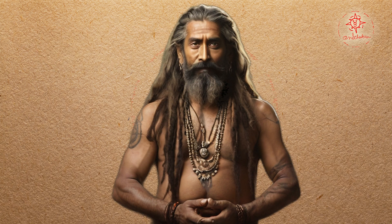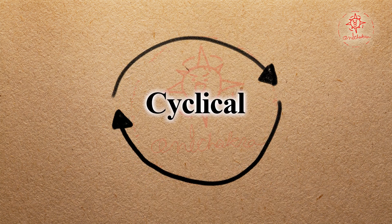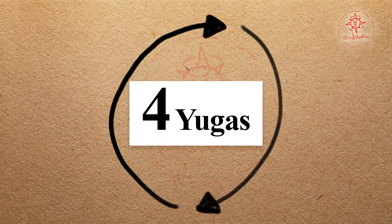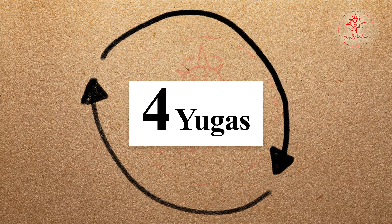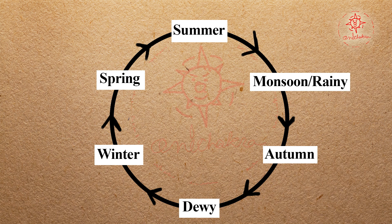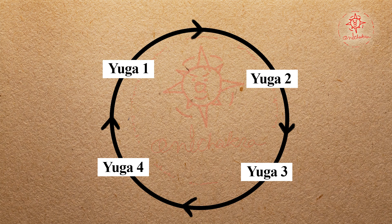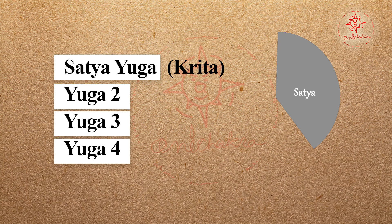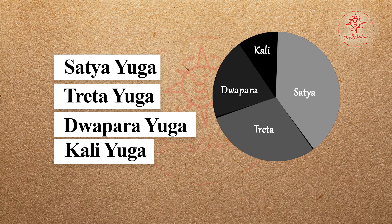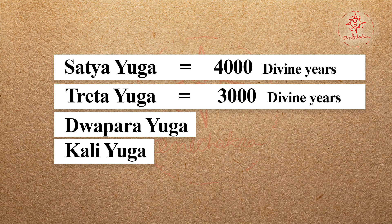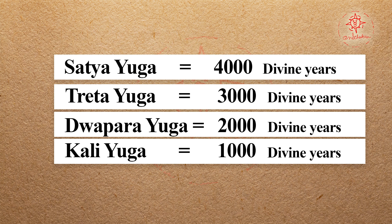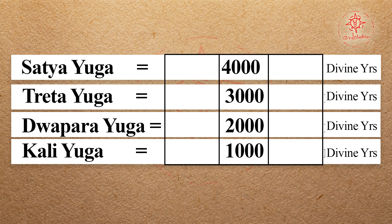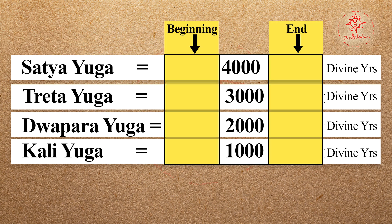In Vedic times, time is viewed as cyclical and is divided into four different Yugas or ages. Just like the seasons, the four ages — Chatur Yuga — rotate one after another without end. The names of the four Yugas are Satya (or Krita), Treta, Dwapar, and Kali. The durations of these Yugas in divine years are 4,000; 3,000; 2,000; and 1,000 respectively. Each Yuga also has extra buffer periods at the beginning and end.